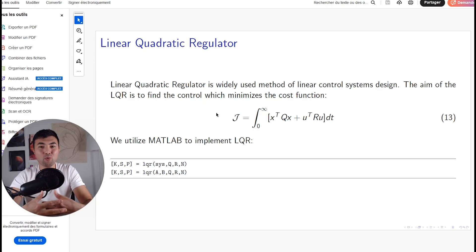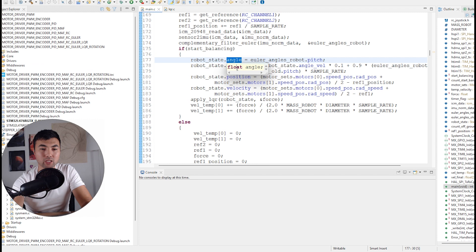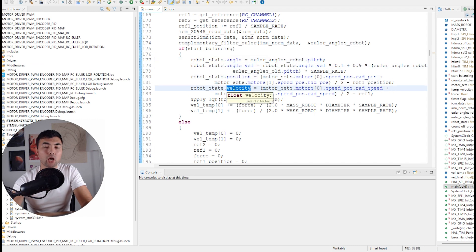Next, how can we implement this idea within the microcontroller? It's also pretty simple. First, we have, as I said, angle, angular velocity, the position and the velocity of the robot.